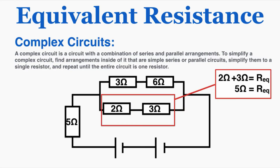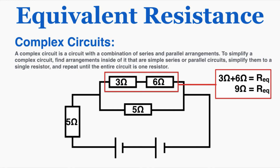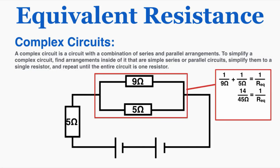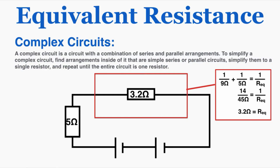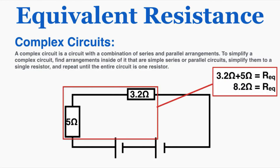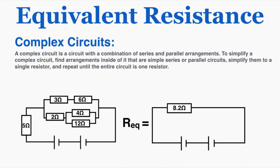Next, looking for other simple arrangements: a simple series arrangement yields 5 ohms equivalent resistance. Doing the same in another branch gives 9 ohms for that series arrangement. Then those two results are in a simple parallel arrangement — plugging into the parallel rule gives approximately 3.2 ohms. Finally, those two resistors are in a simple series arrangement, so adding them gives 8.2 ohms. All of those resistors together behave like a single resistor of 8.2 ohms — that is the equivalent resistance of the complex circuit.